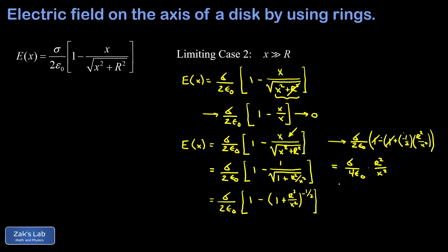Now we want to find the total charge of the disk in this expression. Multiplying numerator and denominator by π gives πR²·sigma in the numerator, which is the total charge Q on the disk. We end up with Q over 4πε₀x², which is exactly the field of a point charge. So our formula for the electric field due to a uniformly charged disk works correctly when very close to the disk and when very far from it.